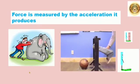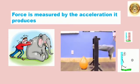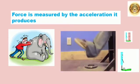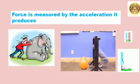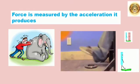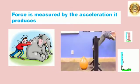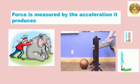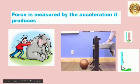We know that it is difficult to move a heavier body than a lighter one. Similarly, it is difficult to stop a moving heavier body than a lighter body moving with the same velocity. Thus, we conclude that the mass of the body is the measure of inertia. More the mass, more the inertia.